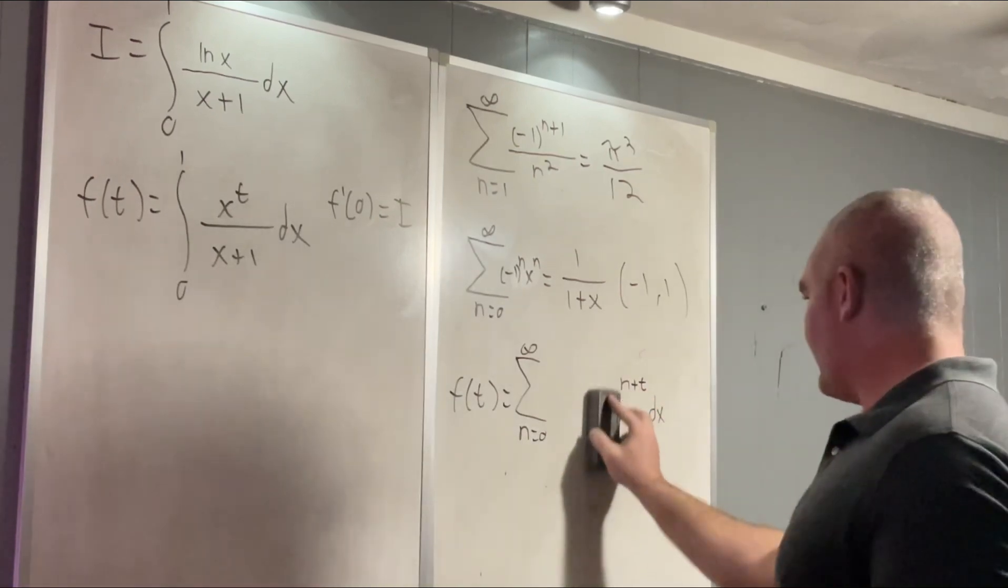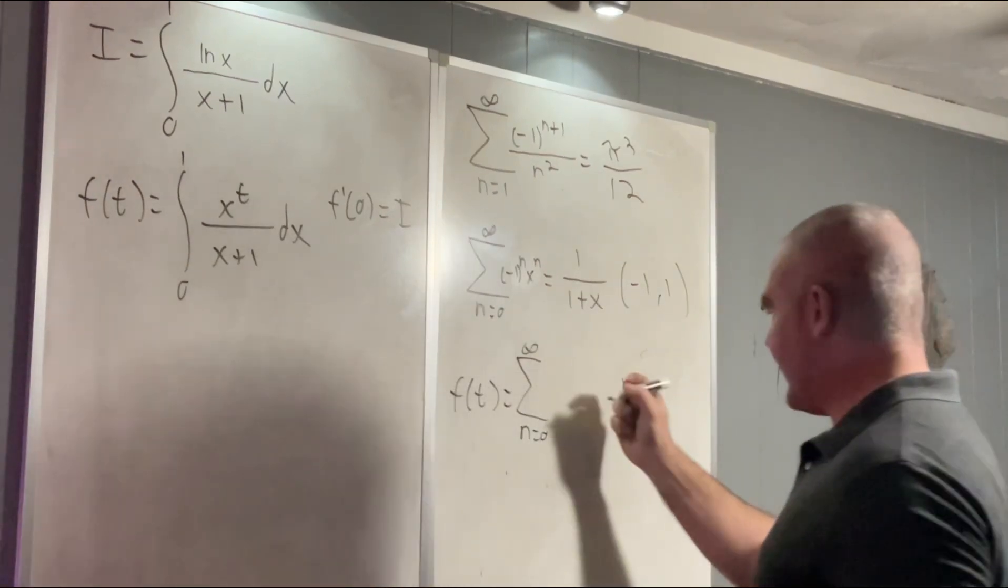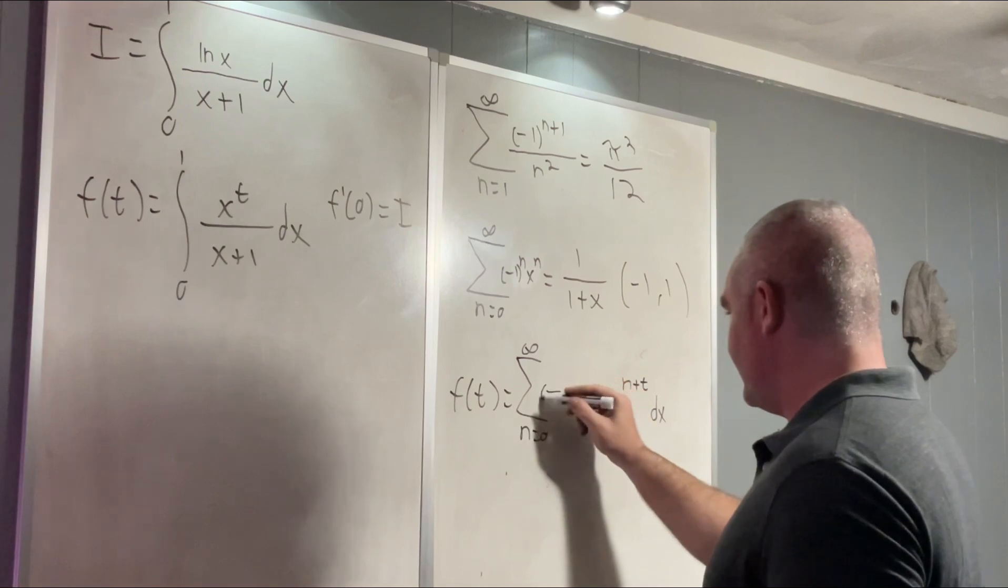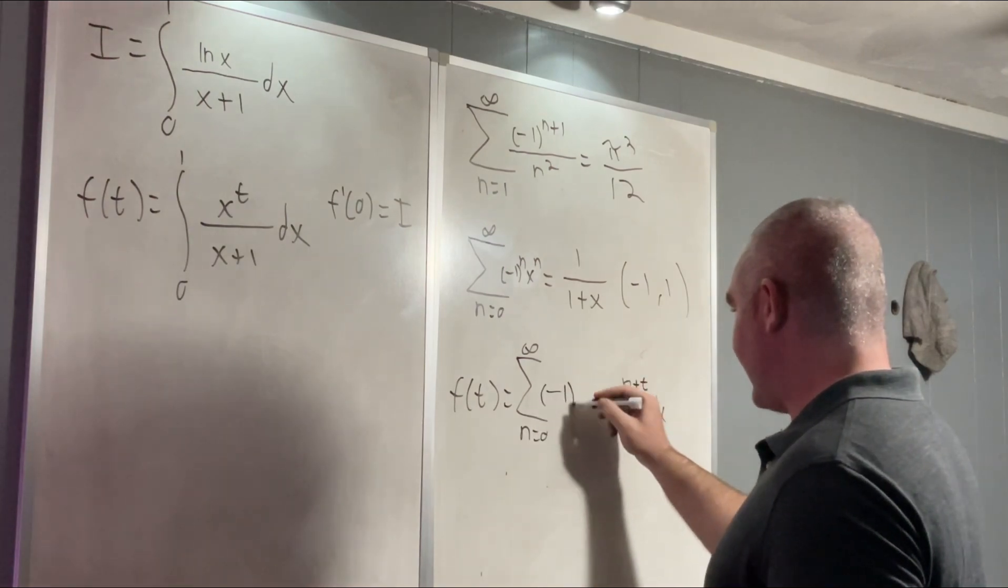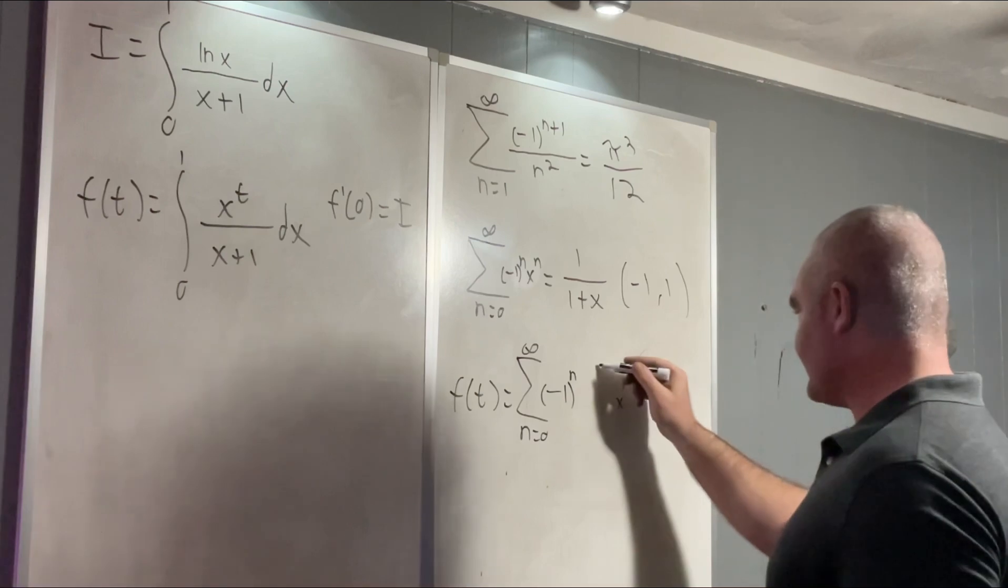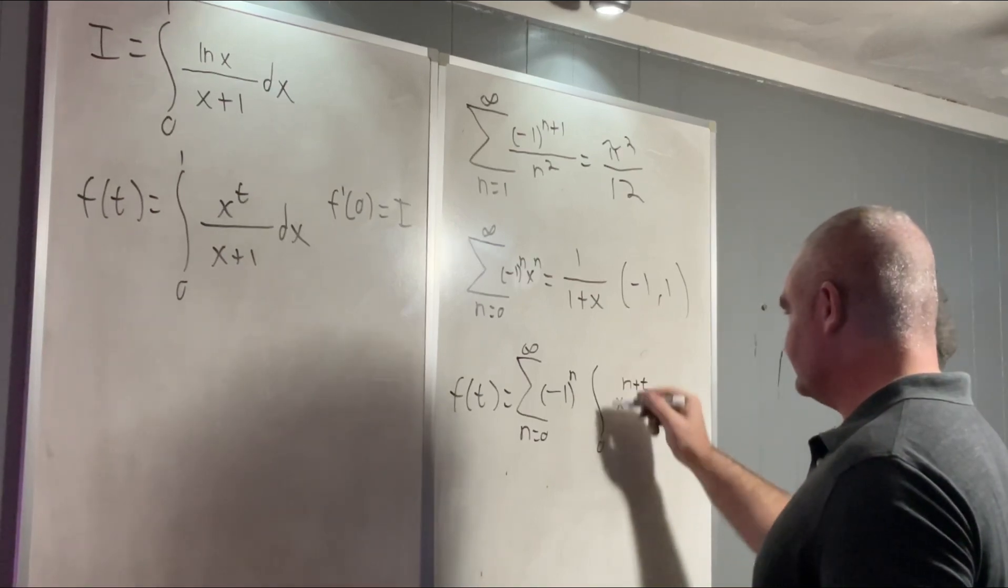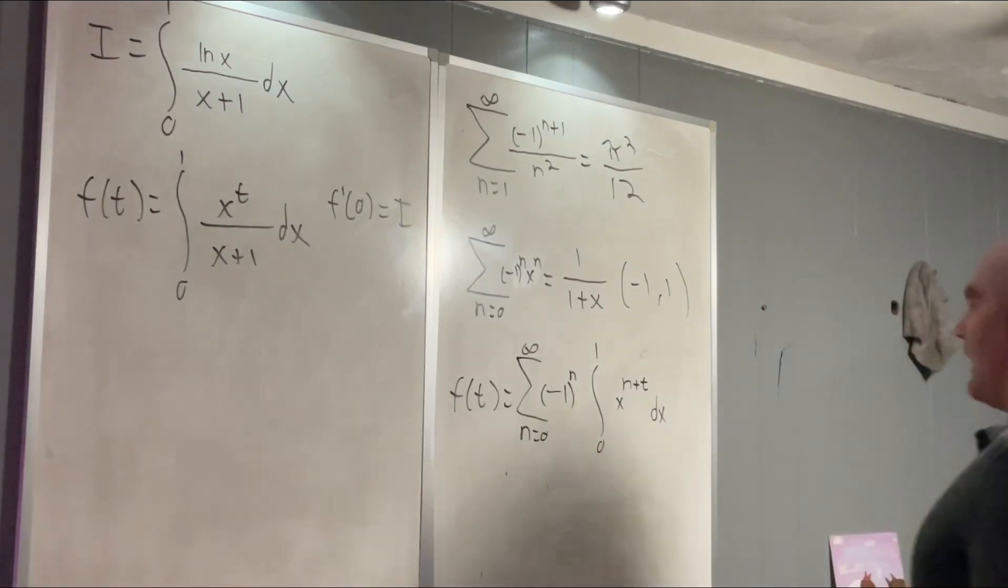But I would like to bring out this negative 1 to the n first because it's independent of x and therefore does not need to be inside our integral.